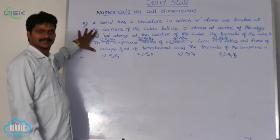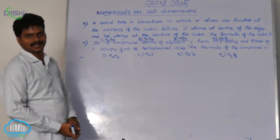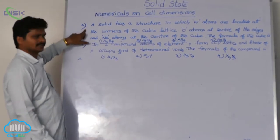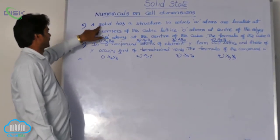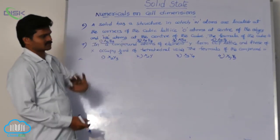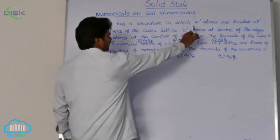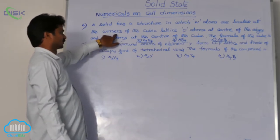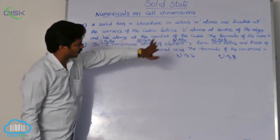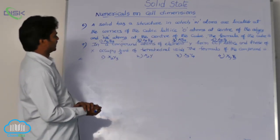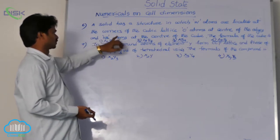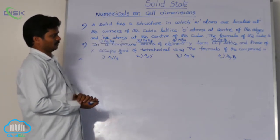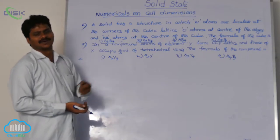These are very important models. See here, see the sixth question first. A solid has a structure in which atoms of element W are located at the corners of the cube, and O atoms are at the center of its edges, and the sodium atoms are at the center of the cube. Then what would be its formula?